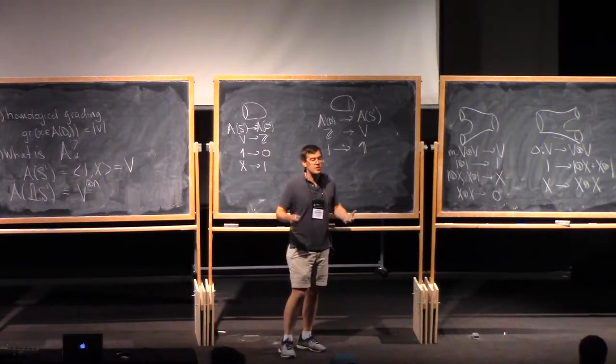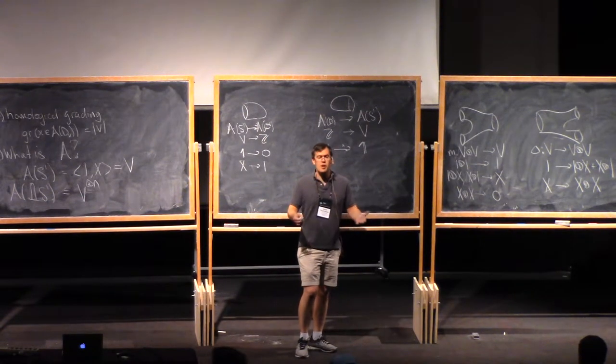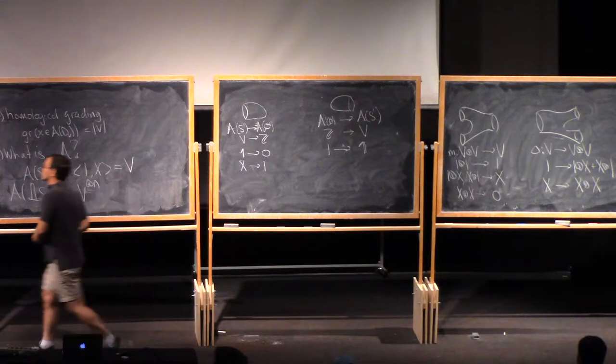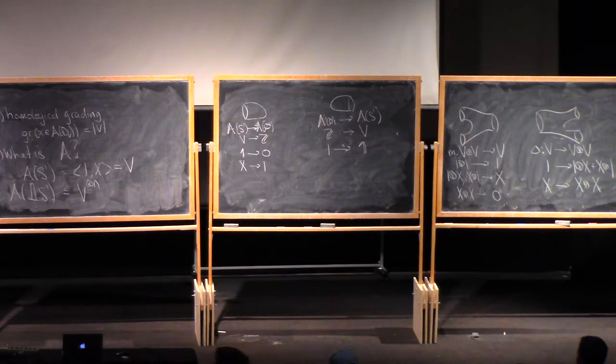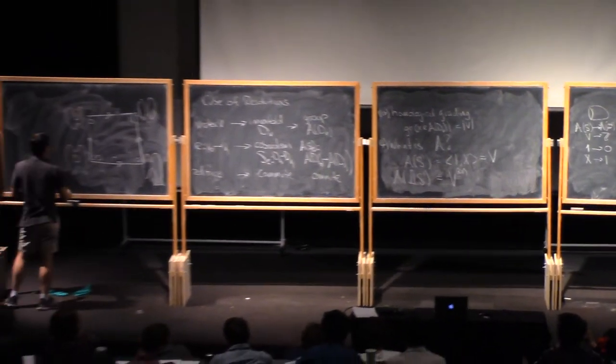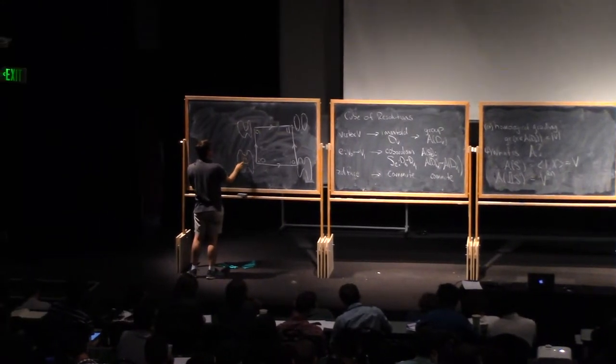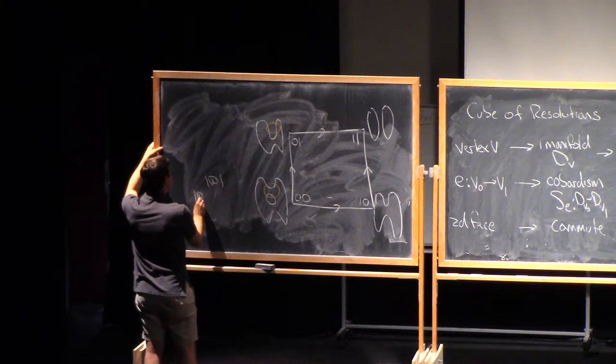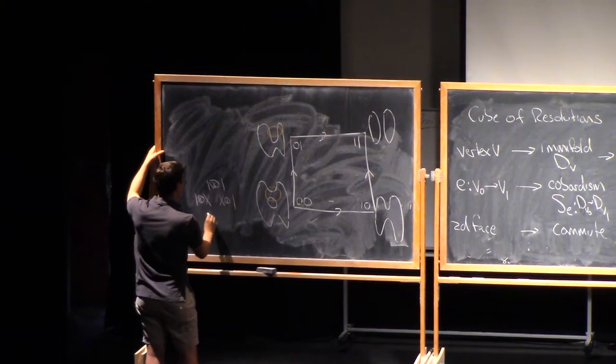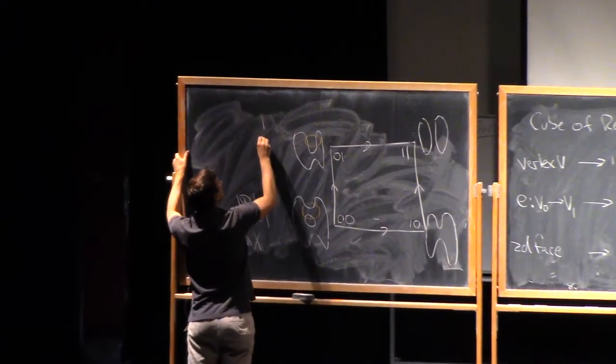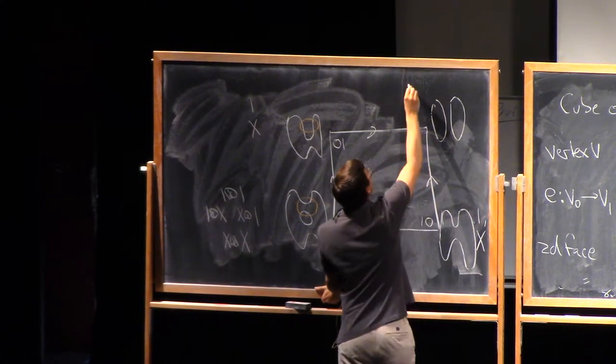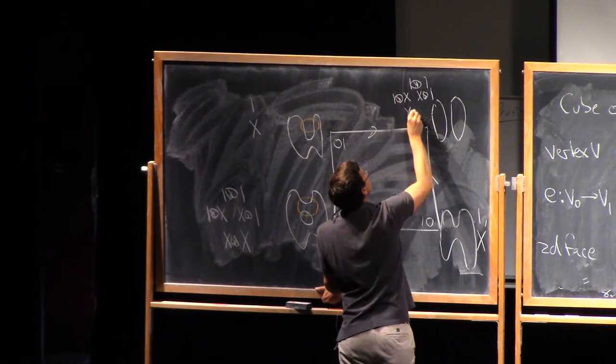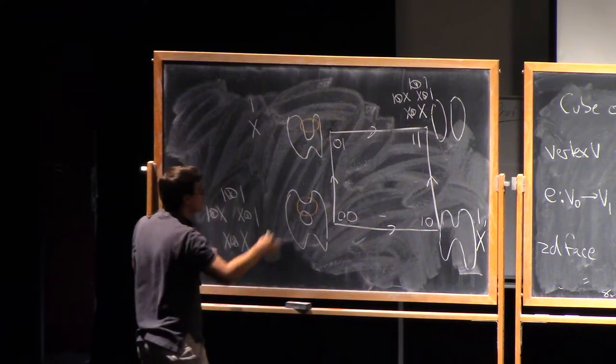So at this point, you know, I've completely defined the homology. You know everything you would need to know to go off and write a computer program to compute KH of your favorite link. Maybe actually, let's make this a little bit more explicit on this diagram over here. So what are the generators that I get? So for example, here, I have a pair of circles. So A applied to this has four generators that look like 1 tensor 1, 1 tensor x, x tensor 1, and x tensor x. Here I get two generators, which are 1 and x. Here again, I get two generators, 1 and x. And here I have 1 tensor 1, 1 tensor x, x tensor 1, and x tensor x. So we have a total of 12 generators, I guess.